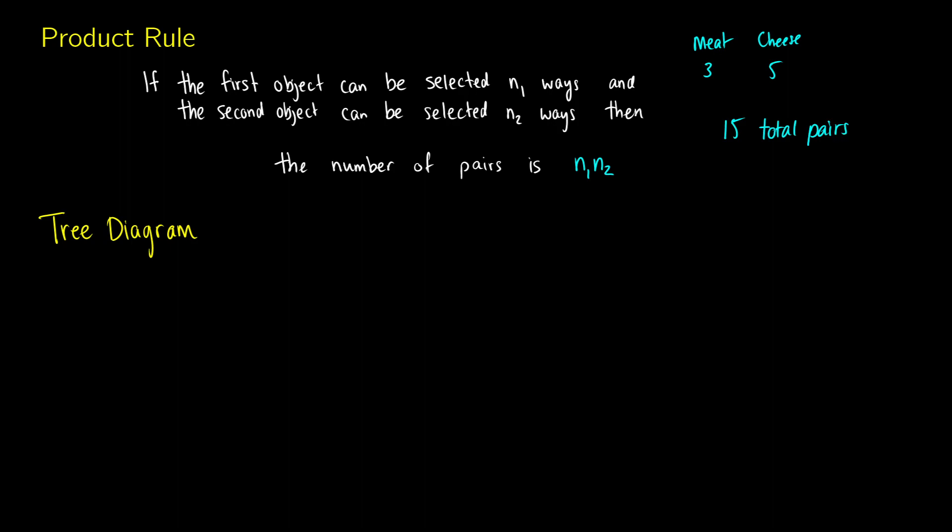So when you have a couple different objects, they each can be done in a different number of ways, you just multiply them together. And we can think of this sort of like a tree diagram. So imagine the first thing you do is choose a meat. So there's going to be three options here. You choose either meat one, meat two, or meat three.